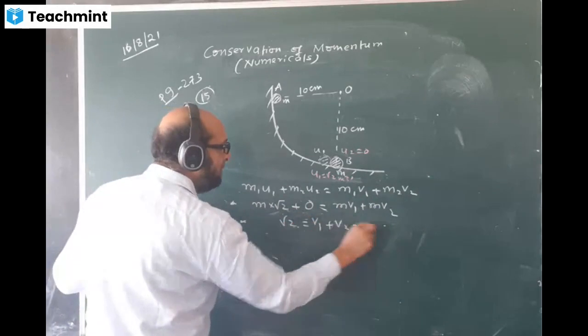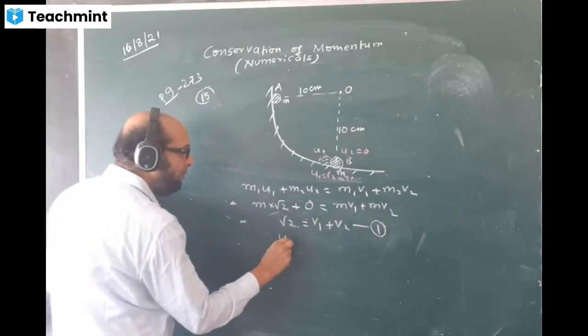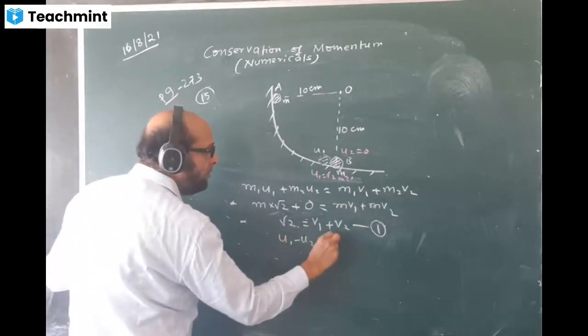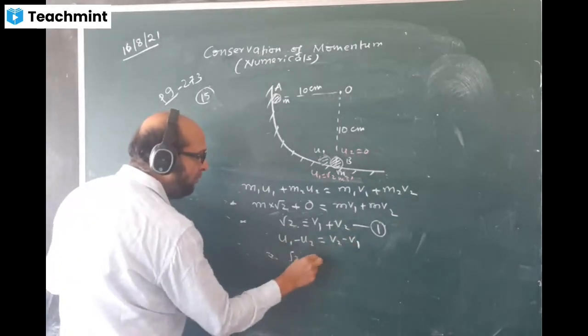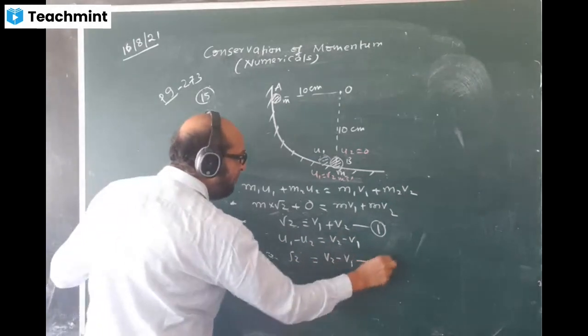Second equation will come. You know that u1 - u2 = v2 - v1. u1 value is √2, this is 0, so v2 - v1 is the second equation.